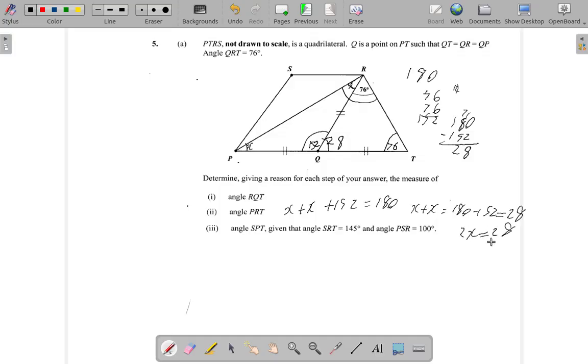X plus X is 28, that means 2X is 28, so X is 28 over 2. 28 divided by 2 is 14, so guess what, this angle is 14, so we have 14 as this angle.